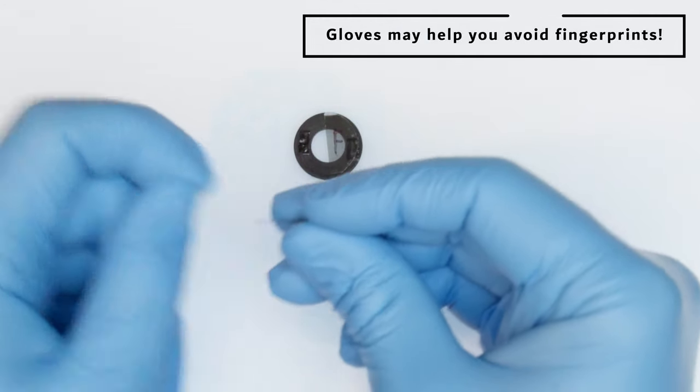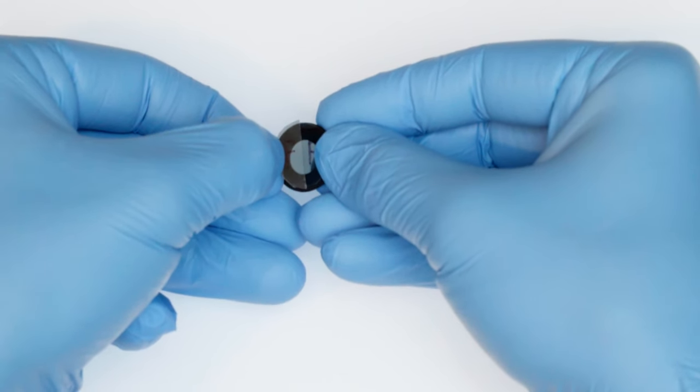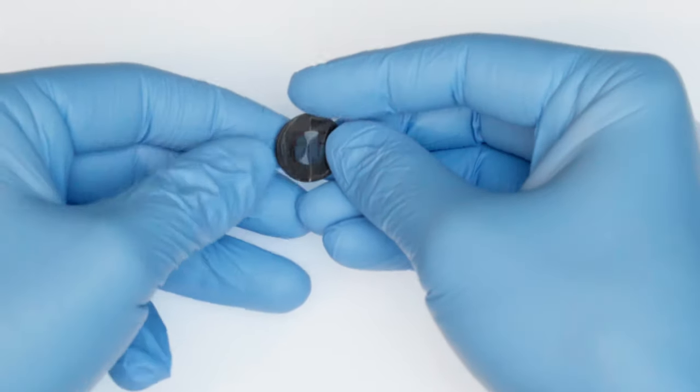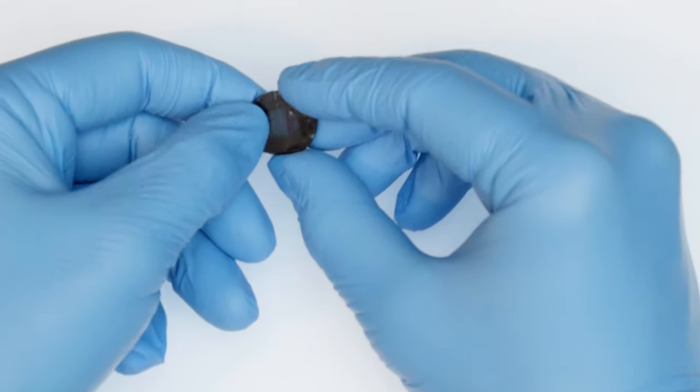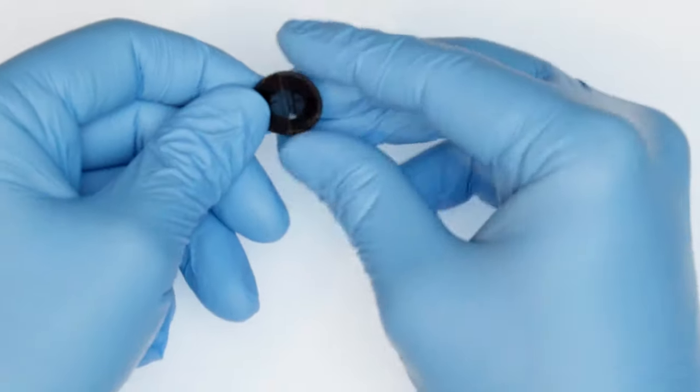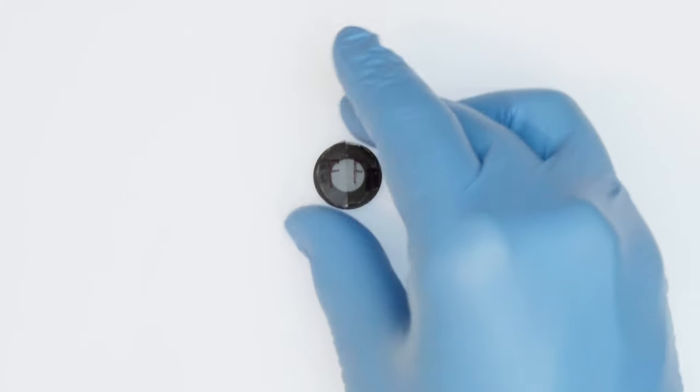Now, do the same thing with the other filter. It's totally fine to eyeball this. If the dividing line is way off-center, just peel them off and try again. One thing you do want to make sure of here is that the filters don't go past the edges of the aperture piece. Otherwise, you won't be able to screw the objective back into the scope. If you have some overhang, just peel the filter off and trim it down a little bit.